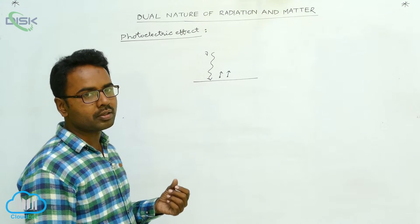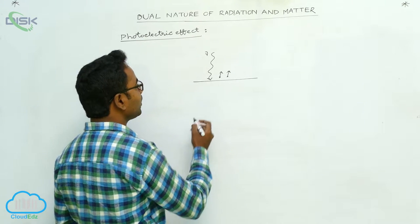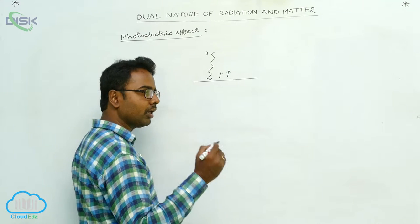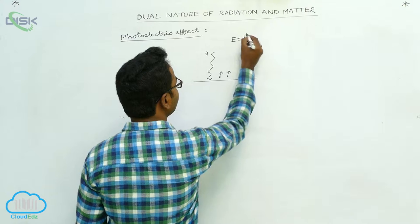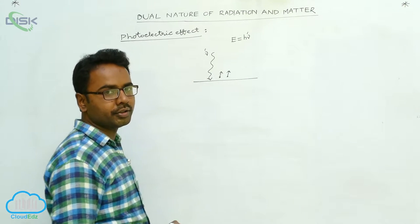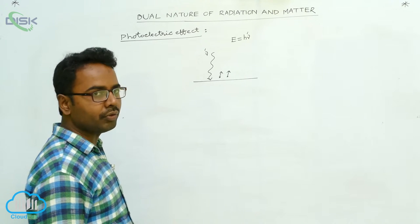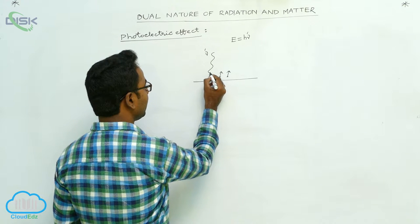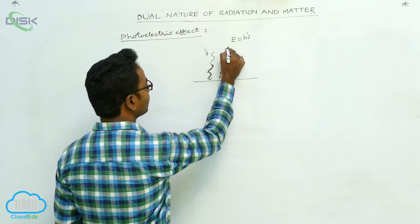Photons are energy particles. Every photon has energy E = hν, where ν is the frequency of the incident radiation. So the energy of each photon is hν.